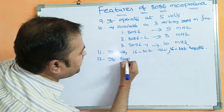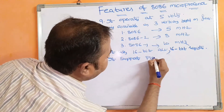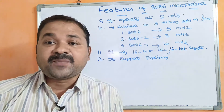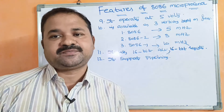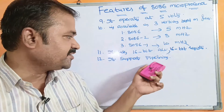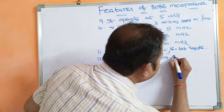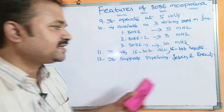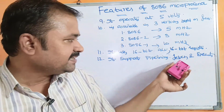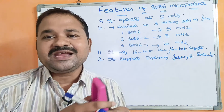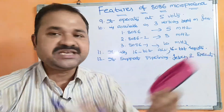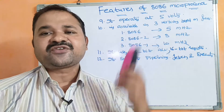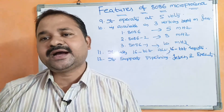The 8086 supports pipelining, whereas the 8085 does not. Pipelining improves the performance and throughput of the system. It mainly uses two stages — fetch and execute. While the first instruction is being executed by the Execution Unit, the Bus Interface Unit simultaneously fetches the next instructions from memory and places them in the instruction queue.